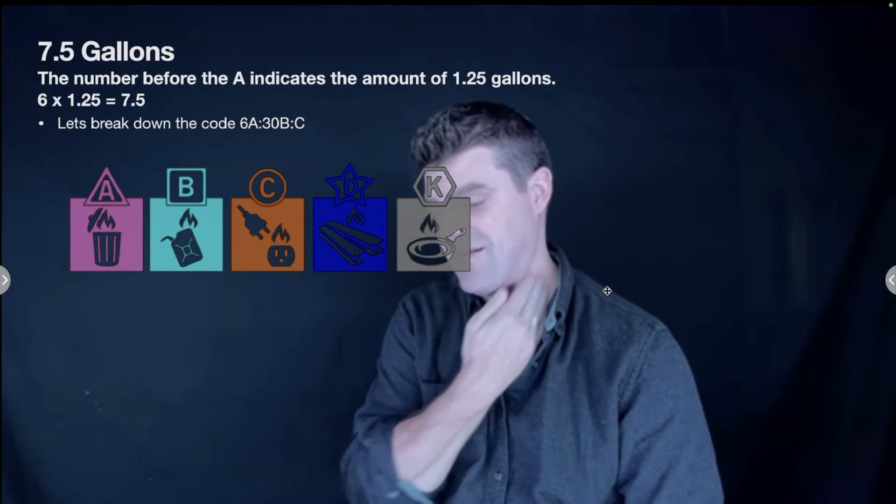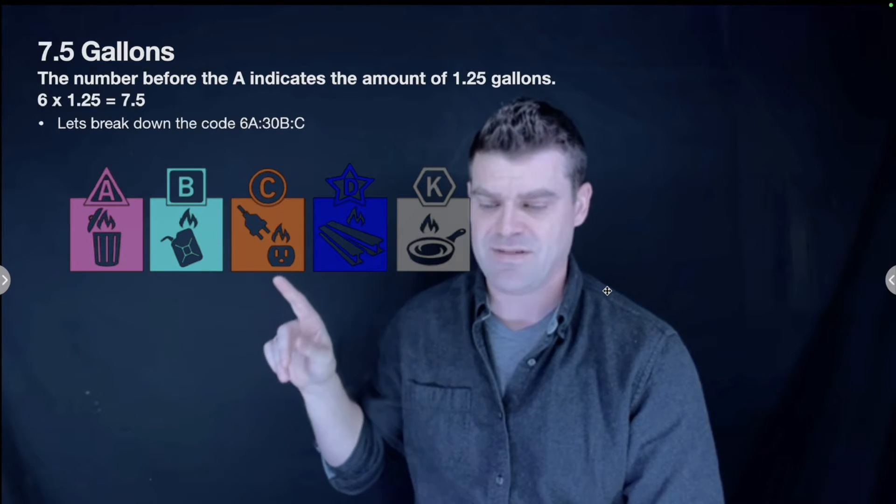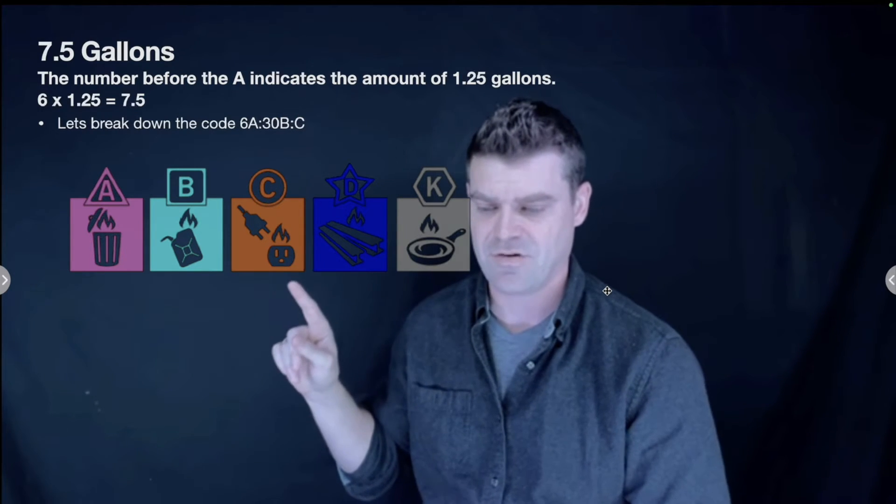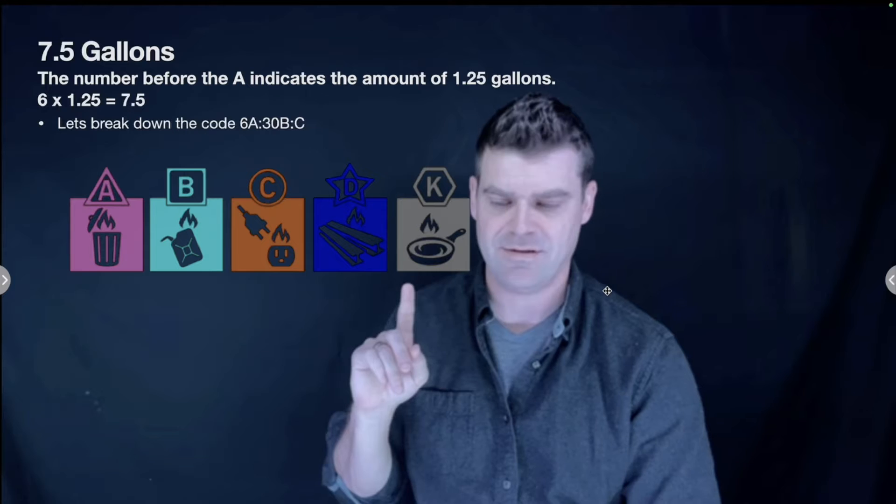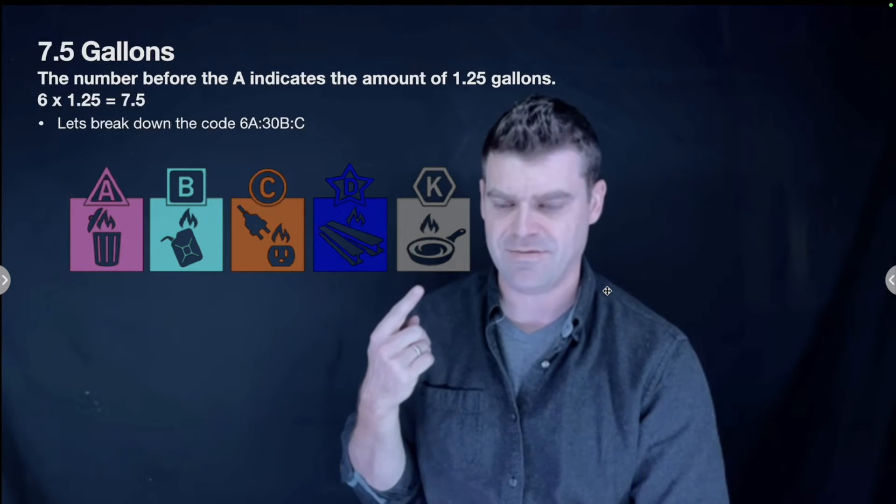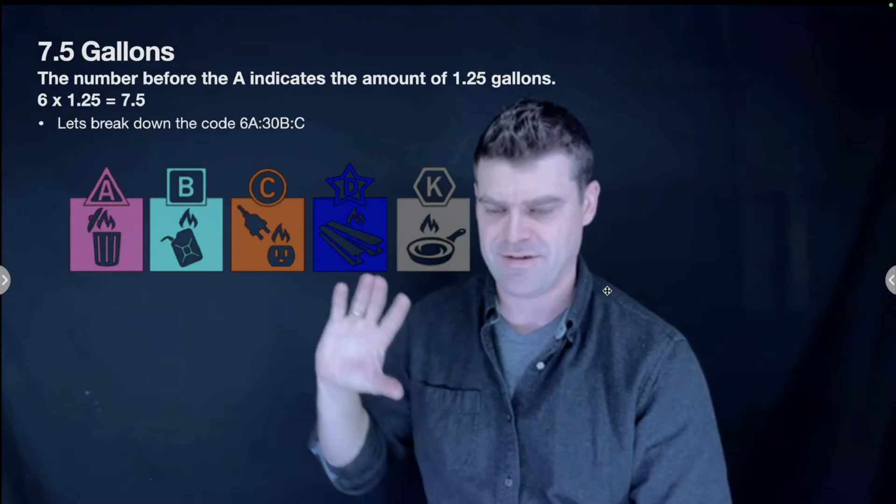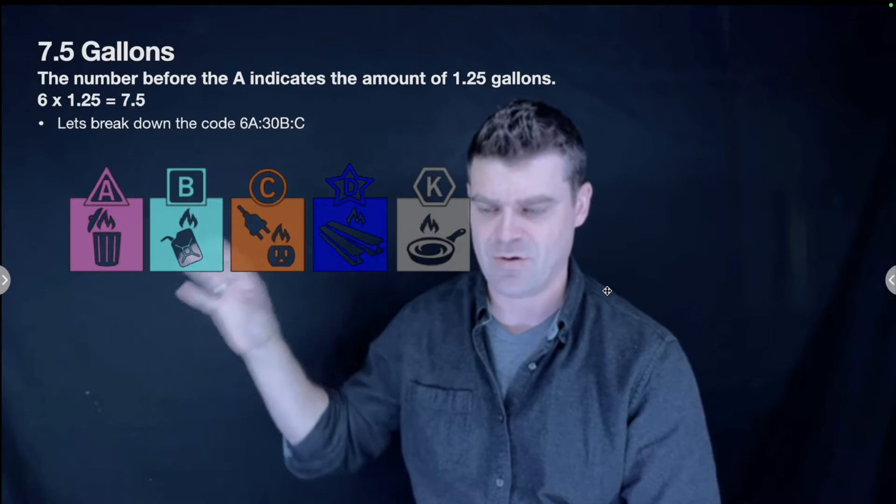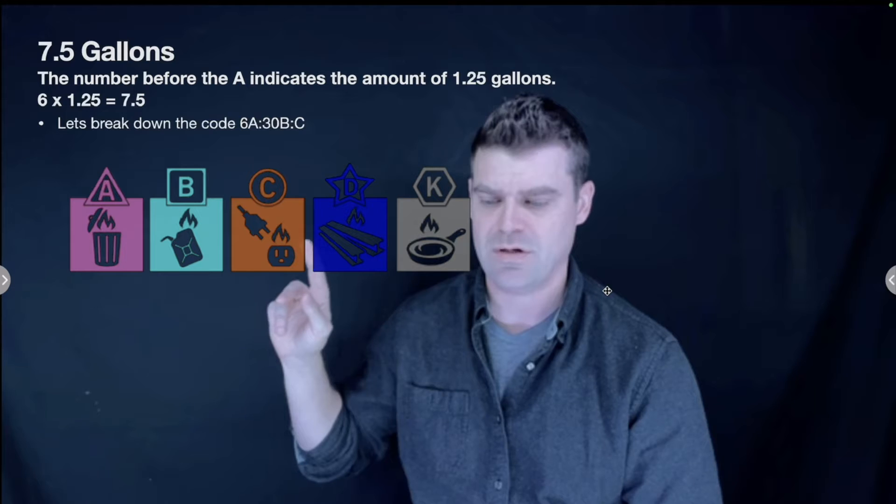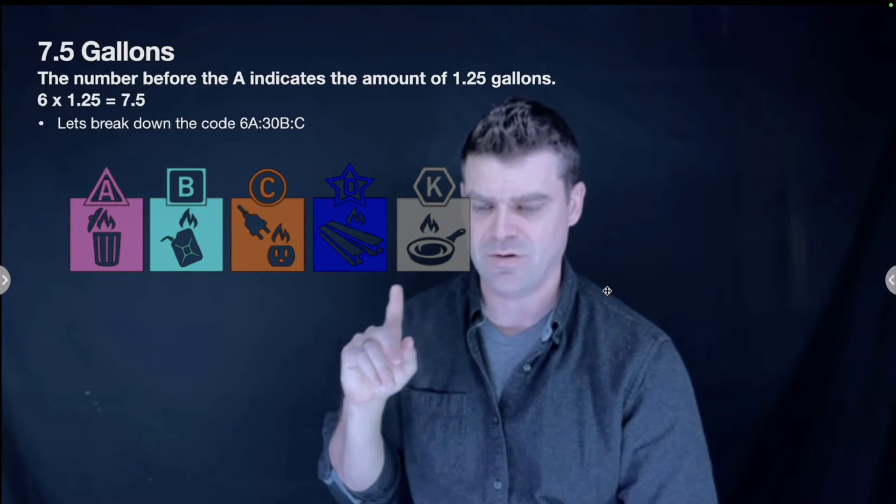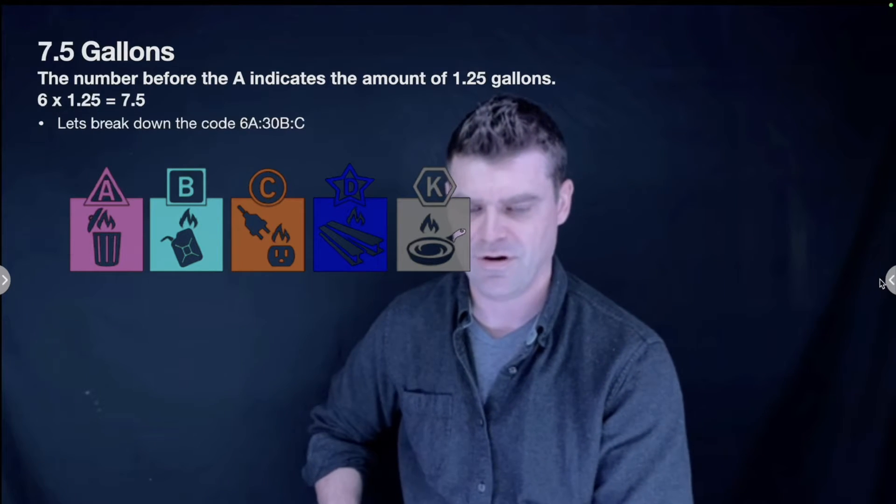The C at the end means that it can extinguish a Type C fire, which is an electrical fire. Other types of fires are Type D, which is combustible metals, and Type K, which is kitchen oil, grease, and deep fryer stuff. Full disclaimer: these colors are all inverted in this presentation, so make sure that you know what those different symbols are for different fire types.